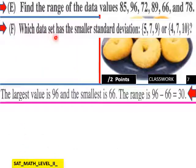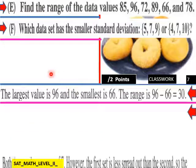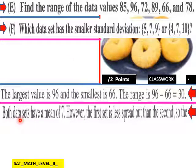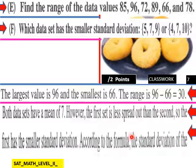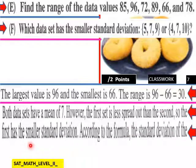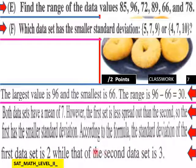And f, which data set has a smaller standard deviation, 5, 7, 9, or 4, 7, and 10? The smaller deviation of these two data sets: both data sets have a mean of 7. Here's our mean here of 7 and 7. However, the first set is less spread. We have less spread here than the second. So the first has a smaller standard deviation. According to the formula, the standard deviation of the first data set is 2, while that of the second data set would be a 3. That'd be your standard deviation there.